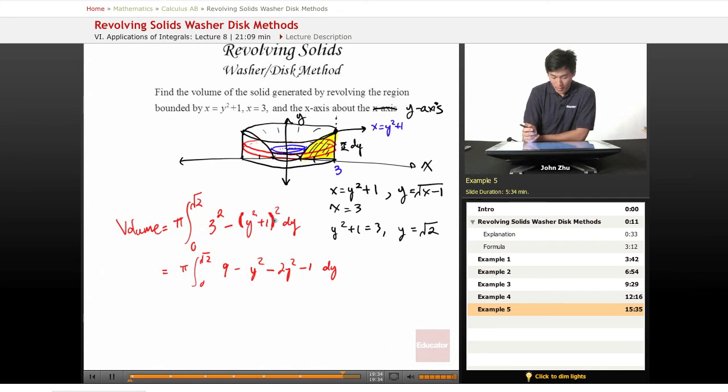That would be silly. So let's go ahead and do this using the power rule. Pi times 9y minus y to the fifth—oh, there should be a y to the 4. Y to the 4 is 1 over 5 y to the fifth minus 2 over 3 y to the third minus y from 0 to square root of 2.